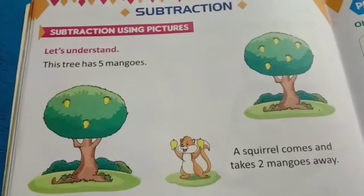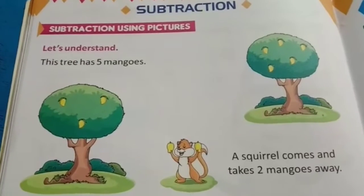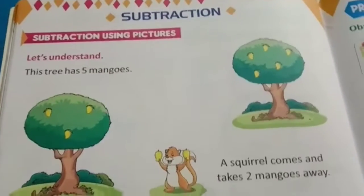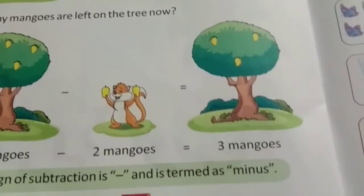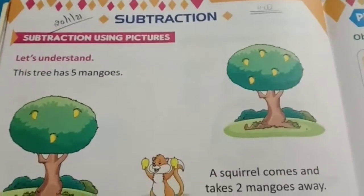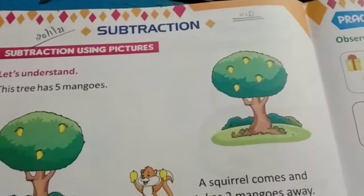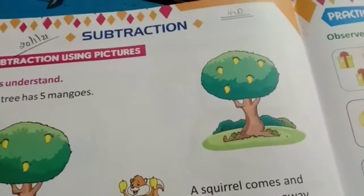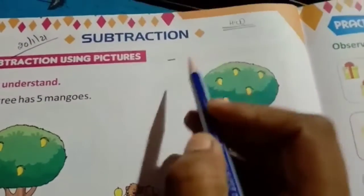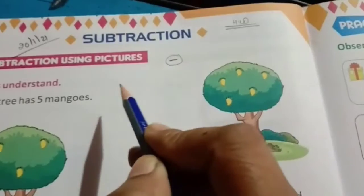Hello students, good morning and welcome to TGS e-learning platform. Today's subject is math. Open your math book to page number 50. Our topic is subtraction. Subtraction means 'kam karna' — to cut or minus. The symbol for subtraction is a small horizontal line, like this — this is the subtraction symbol.